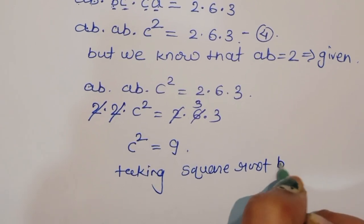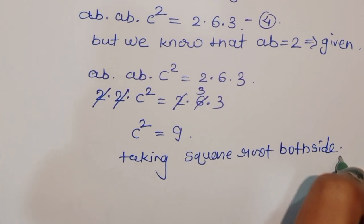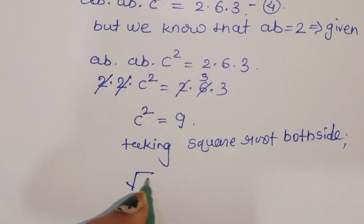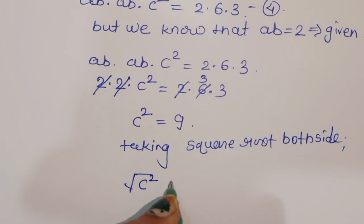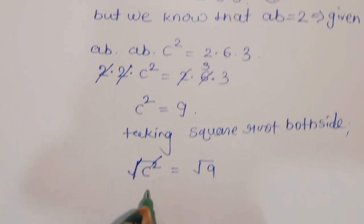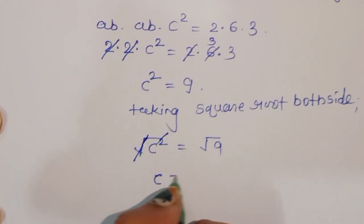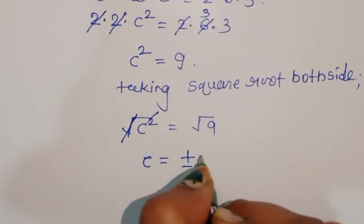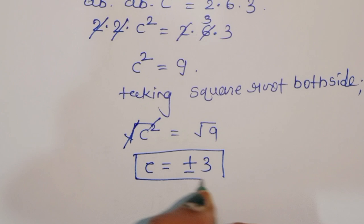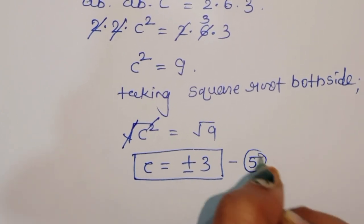Now taking square root on both sides: square root of c squared equals square root of 9. This gives us c is equal to plus or minus 3. This is the value of c — equation 5.